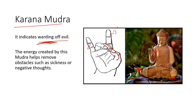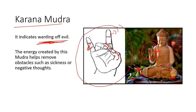In Karna Mudra, the right hand is raised upward far from the chest. The middle finger and thumb are joining to each other, the ring finger is bent towards the thumb, and the index and little fingers are in a vertical position. This mudra indicates removal of evil thoughts or negative thoughts from the body, and creates energy which helps to remove sickness or negative thoughts.